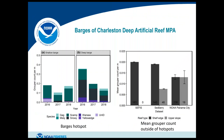Moving to the barges of the Charleston Deep Artificial Reef MPA: the shallow barge (85m) and deep barge (100m) show mean grouper counts per linear meter ranging from about 0.1 to 0.35 — compared to only 0.02 outside hotspots. The graphs show a breakdown of grouper species at each barge. The shallow barge hosts scamp, gag, red snapper, gray snapper, amberjack, and even a juvenile speckled hind observed last year.